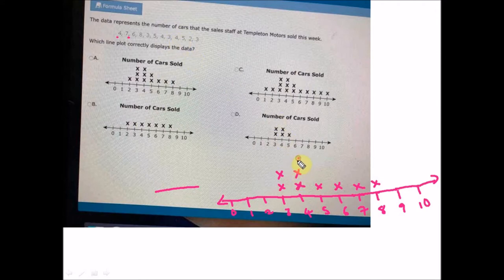The ninth sold four, so we have another sales staff that sold four cars this week. The tenth sold five cars, so we have another person that sold five cars. The eleventh sold two, so we have it here under two.